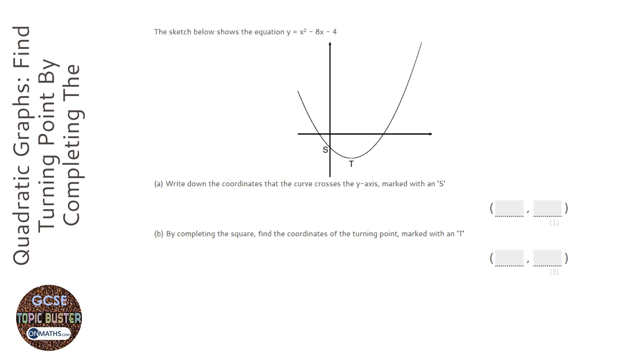OK, the first question asks us to find the y-intercept. Now, at the y-intercept, x is 0, so if you have a look at our equation, these two will be wiped out because anything times 0 is 0, and we're just left with y equals minus 4.